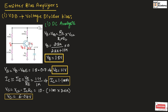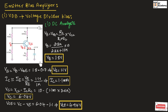Now let us find VCE. VCE equals VC minus VE. So VCE equals 6.04 volts minus 1.1 volts, giving VCE equal to 4.94 volts. This completes the DC analysis for the voltage divider bias circuit.